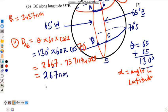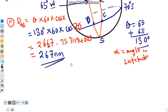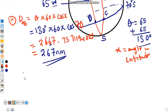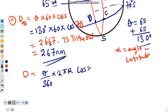An alternative formula can also be used: distance = (θ/360) × 2πr × cos(x), where θ is the difference in longitudes, r is the Earth's radius, and x is the latitude angle. Substituting and solving gives the same answer, correct to three significant figures.